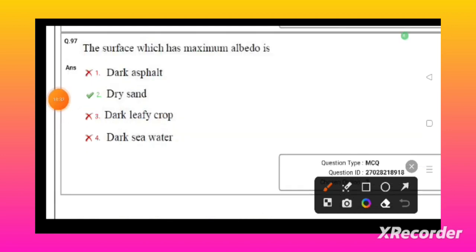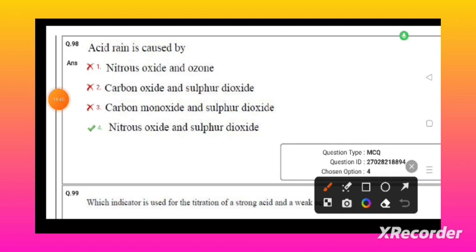Acid rain is caused by nitrous oxide and sulfur dioxide. Which indicator is used for the titration of strong acid and weak acid? Methyl orange is used for strong acid and weak acid titrations.